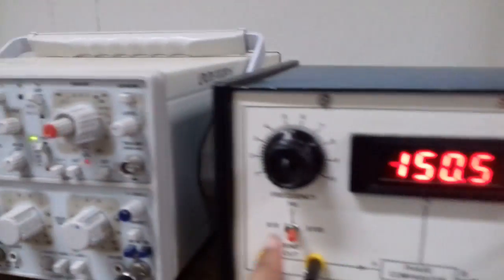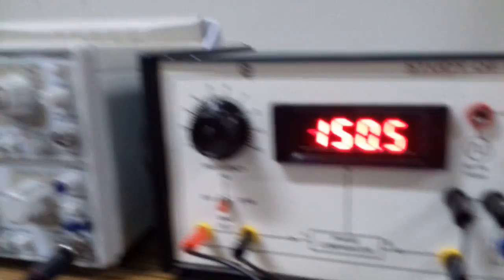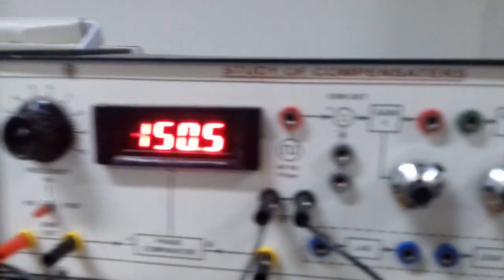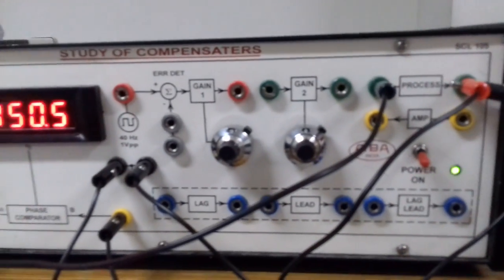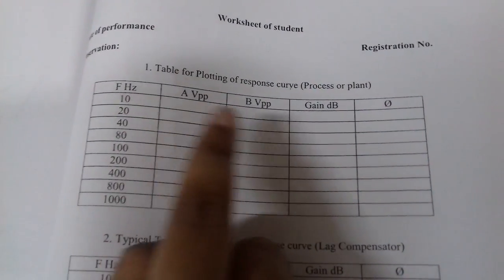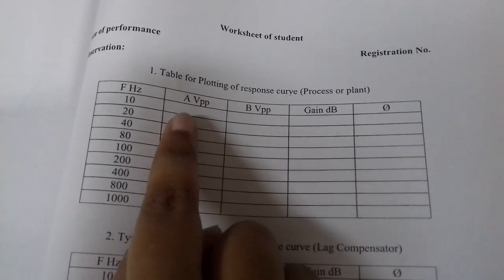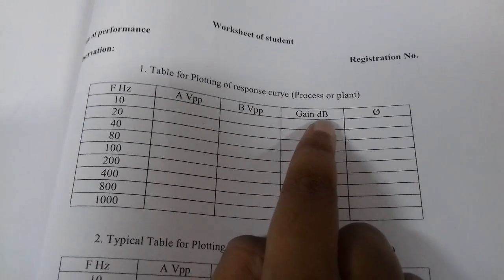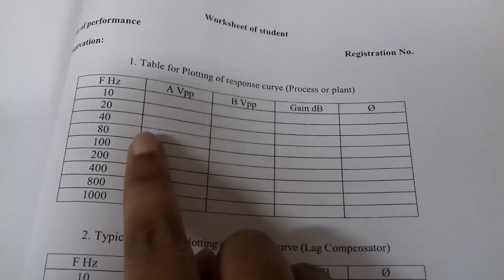At different input frequencies we are going to be observing what is my input. At these frequencies we are going to be finding out what is the process output on the CRO. The gain is to be noted and will be calculated as B divided by A, where B denotes the output and A denotes the input. Since it is written here in dB, you need to take 20 log B upon A.